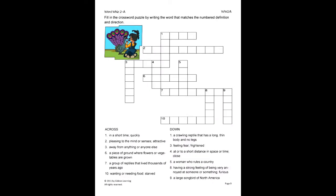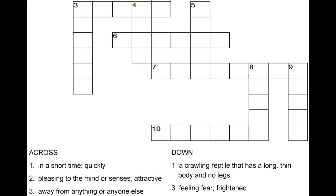On this activity, the student will fill in the crossword puzzle by writing the word that matches the number definition and direction. Let's do number three for example. First, read the definition. Away from anything or anyone else. Since we know this is the definition for alone, we will write the word in the boxes for number three across.